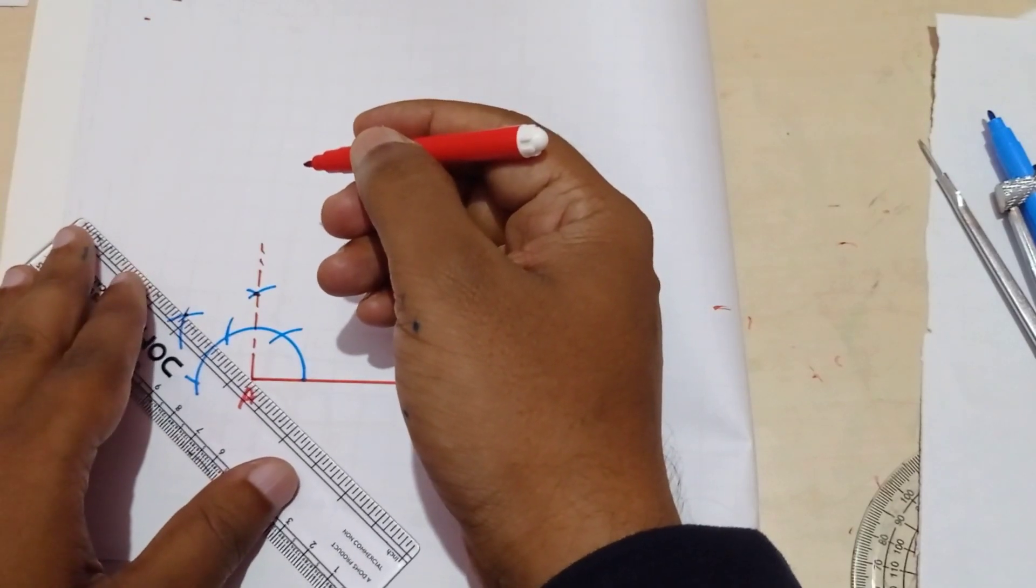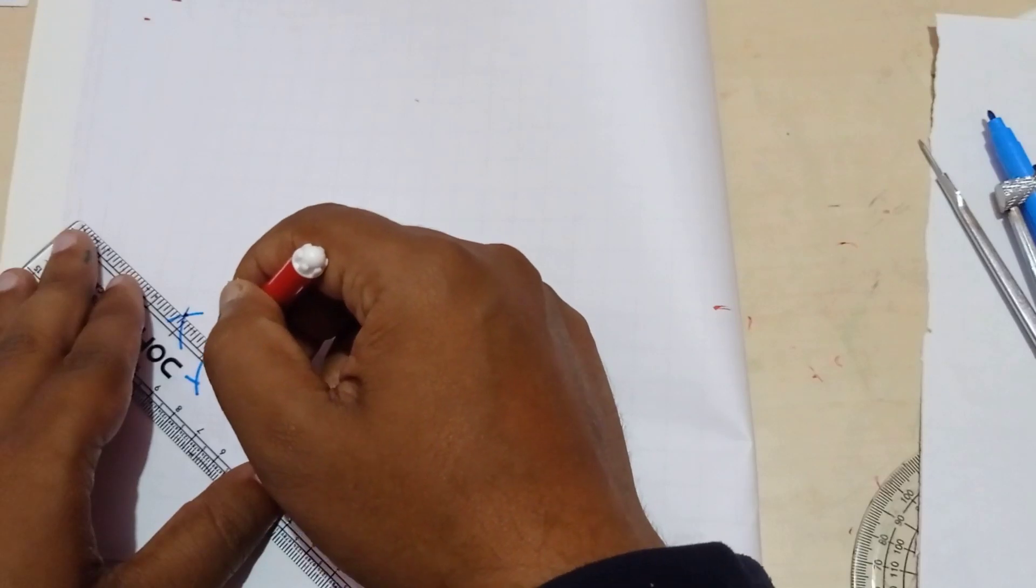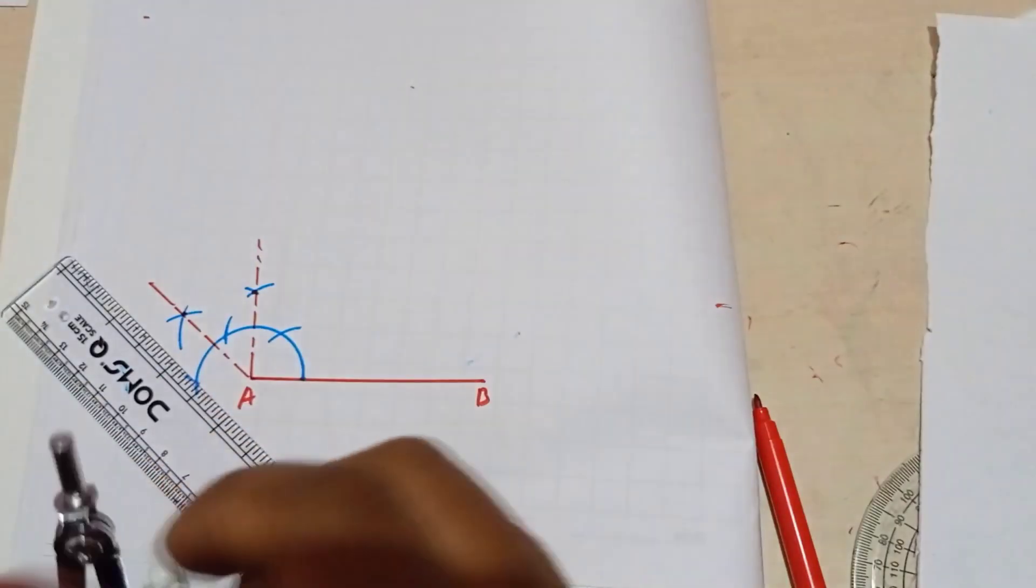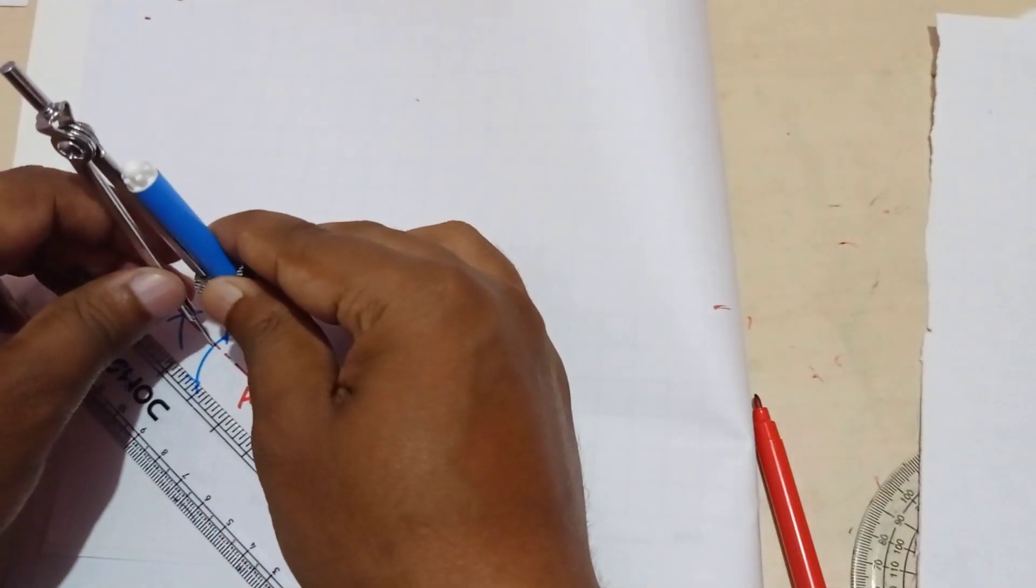So now we will try to join. So this is 135 degree. Now exactly bisecting this length we get the 67.5 degree.